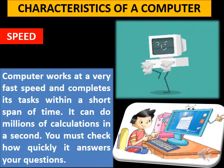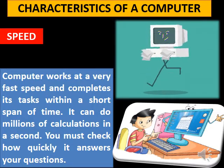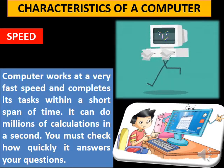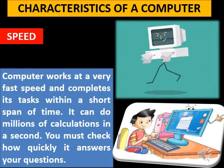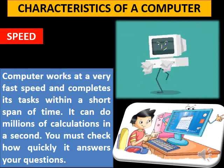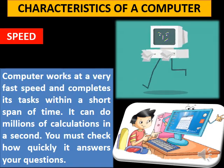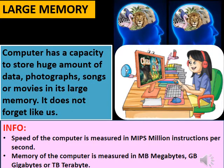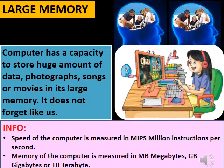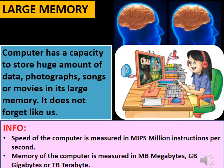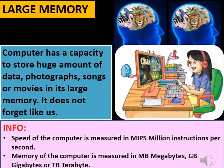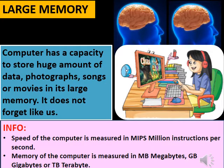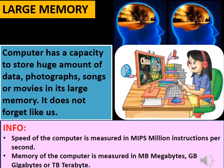Characteristics of a computer. First, speed: a computer works at a very fast speed and completes its tasks within a short span of time. It can do millions of calculations in a second. Second, large memory: a computer has the capacity to store a huge amount of data, photographs, songs, or movies in its large memory. It does not forget like us.